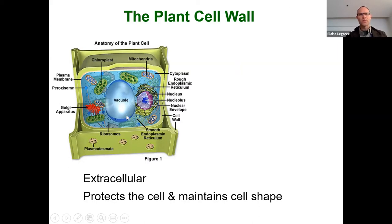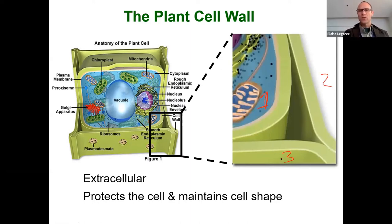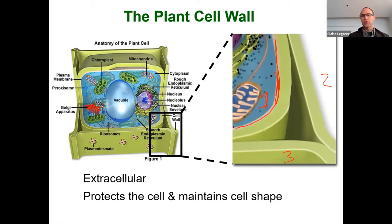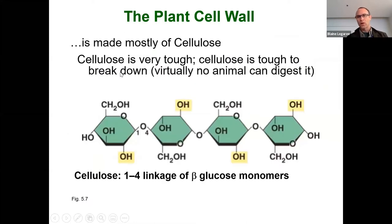If you zoom in on the picture, you're looking at three cells. We have cell one, cell two, and cell three — they're showing the junction of three cell walls in this diagram. Here's the plasma membrane, and the cell wall is outside of the plasma membrane. A huge important thing for plants is protecting the cell from osmotic pressure and maintaining cell shape.